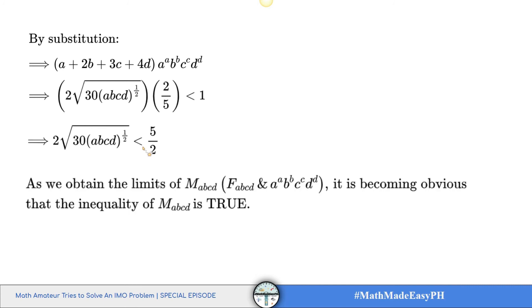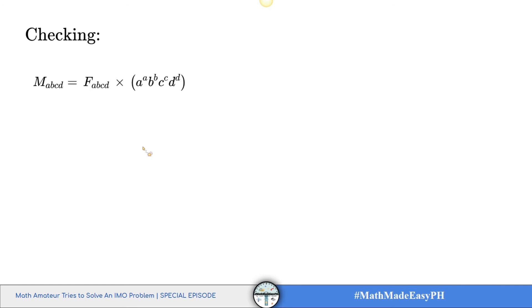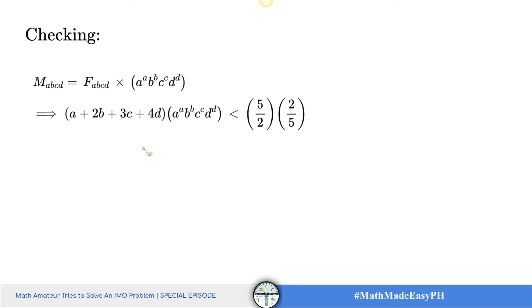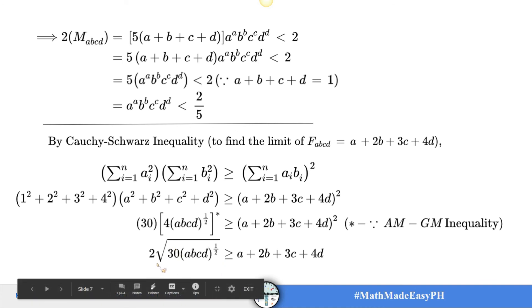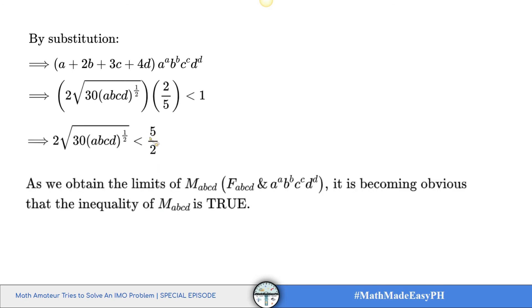Now that we have obtained the limits, it is becoming obvious that equality holds at a certain point. We proceed to checking. As you can see, I use the limit 2√30 × √(abcd) because it is valid here — and as we established, this is also equal to 5/2. So the limit of the second factor is also confirmed to be 5/2.